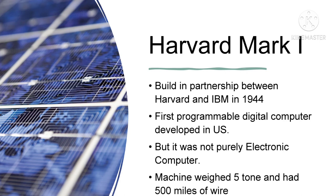Next is Harvard Mark I. The Harvard Mark I computer was built in partnership between Harvard and IBM in 1944. This was the first programmable digital computer developed in the US, but it was not a purely electronic computer. The machine weighed five tons and had 500 miles of wire. It was eight feet in height and 51 feet in length.